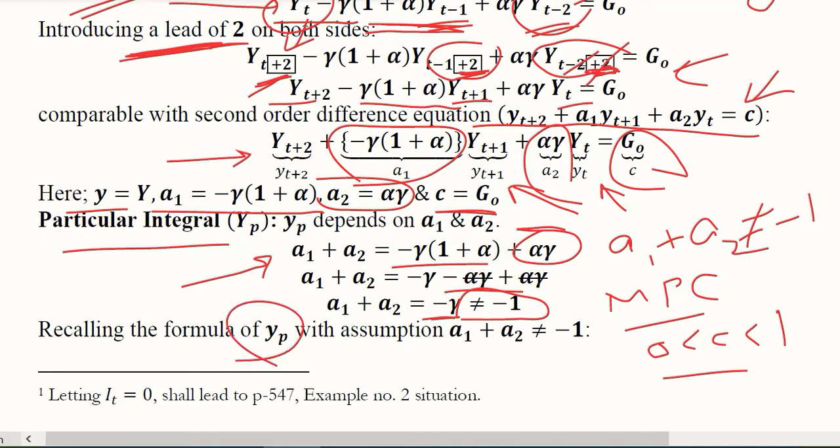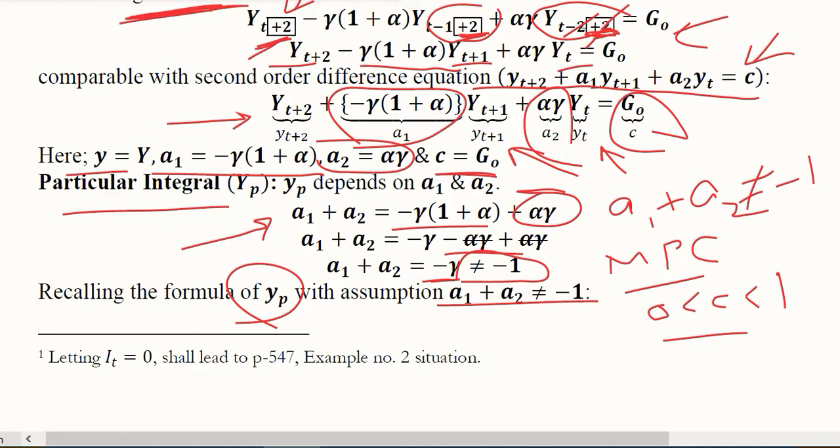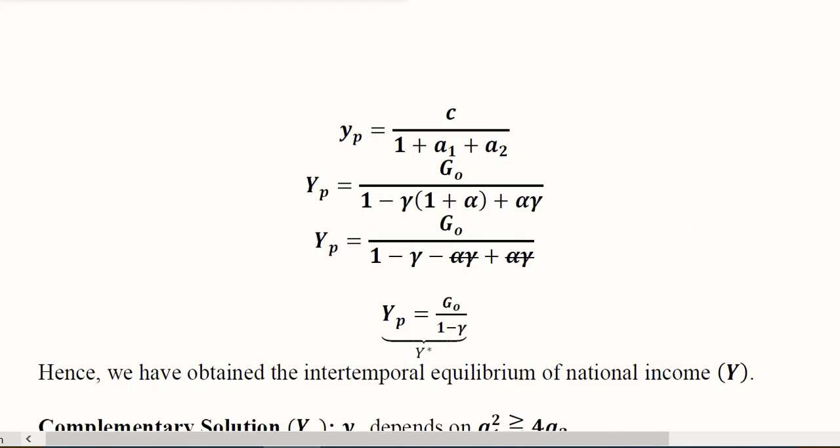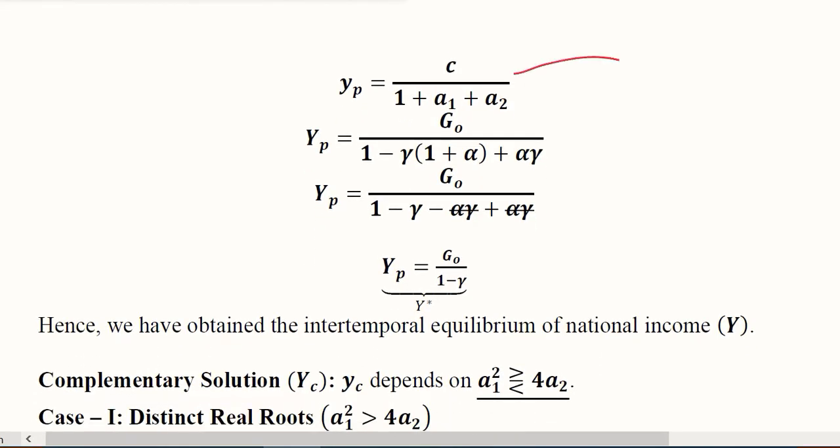So in this case the formula for YP, that is the particular integral, has a certain shape that we will see. This is the formula which is used once the sum of A1 and A2 is not equal to minus 1.